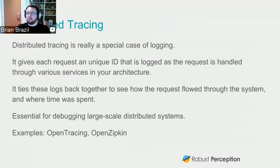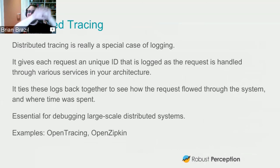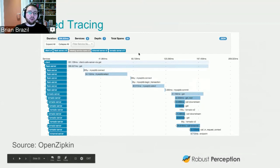The fourth class is distributed tracing — really a special case of logging. Normally logs across different machines are independent. What distributed tracing does is give each end-user request a unique ID that's propagated as all of its sub-requests cascade through the system. Then something like OpenTracing or OpenZipkin stitches these all back together so you can see the entire history of a request. You can see the big overall request, the MySQL parts, all the other servers it's talking to, and how this is traced over time. This is essential if you've got a microservice architecture on something like OpenShift.